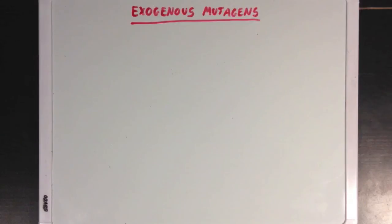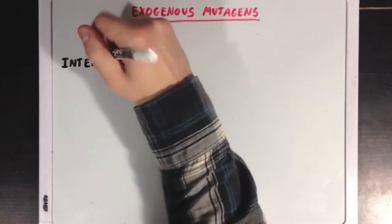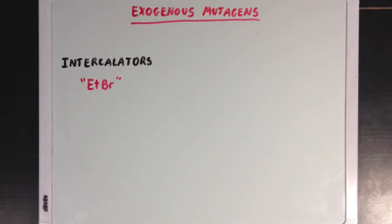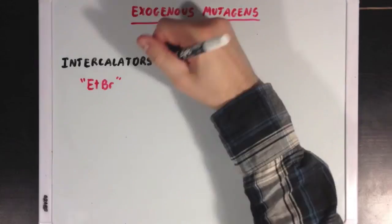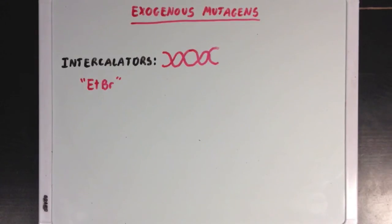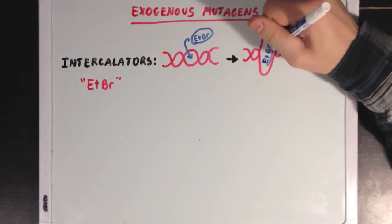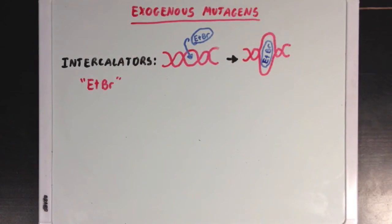Now let's look at a couple of examples of exogenous mutagens. Intercalators are one example — ethidium bromide, which you may be familiar with from PCR experiments, will jump into a DNA double helix and stick itself between the two strands. When intercalators intercalate into DNA, they can deform the structure of the DNA and cause some serious problems.